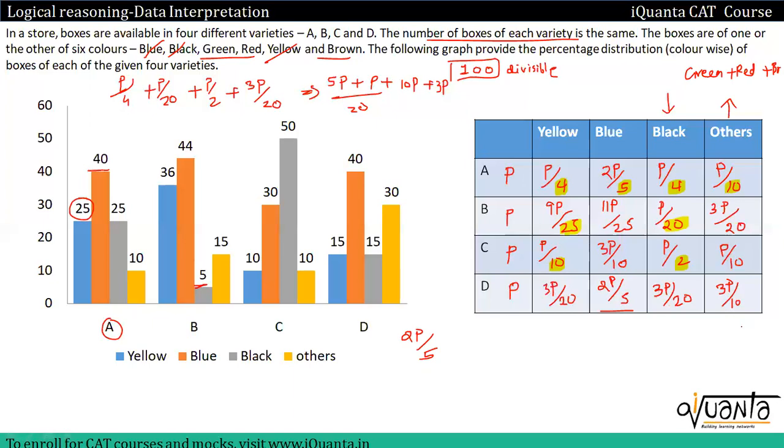Others' value is 2P/5 green. This is my others' value. From this I can solve for red plus brown.